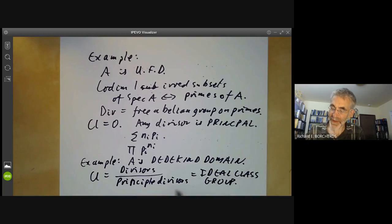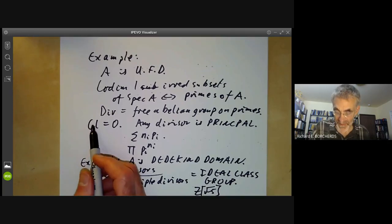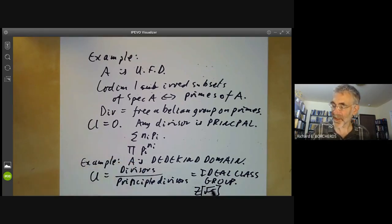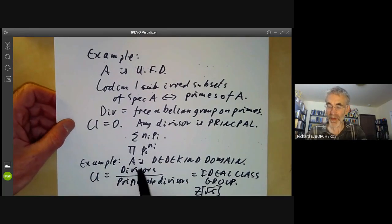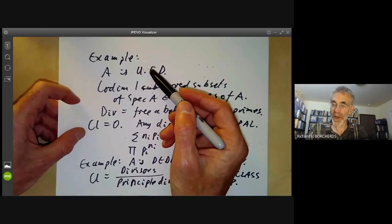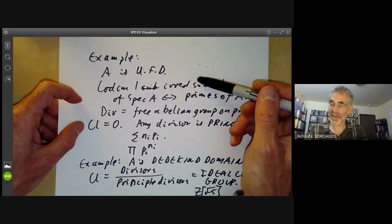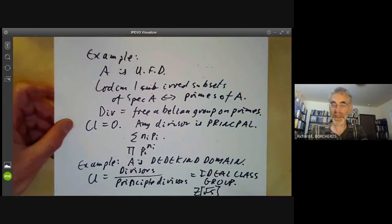There are plenty of examples of Dedekind domains where the ideal class group isn't zero, for instance Z root minus five. For Z root minus five, the group of Weil divisor classes is non-zero. In fact, it happens to be of order two. So there are plenty of examples where the group of Weil divisor classes is trivial and plenty where it's non-trivial.